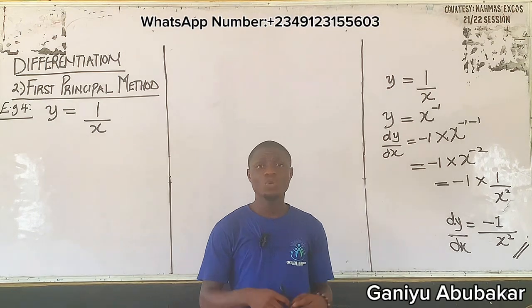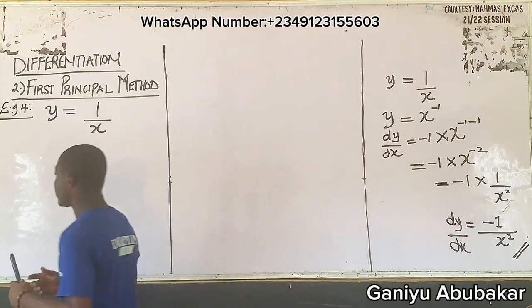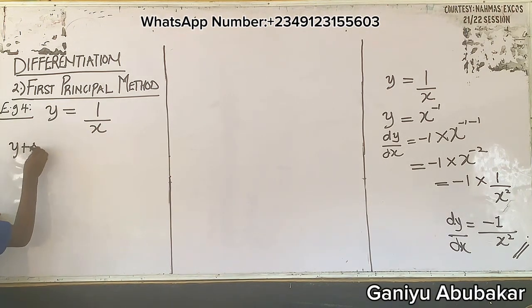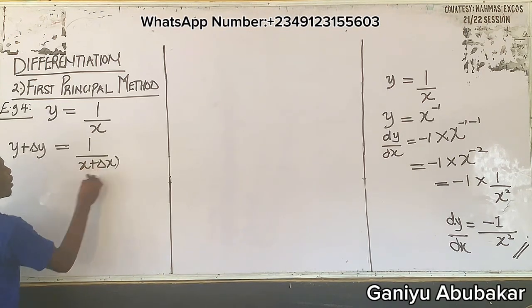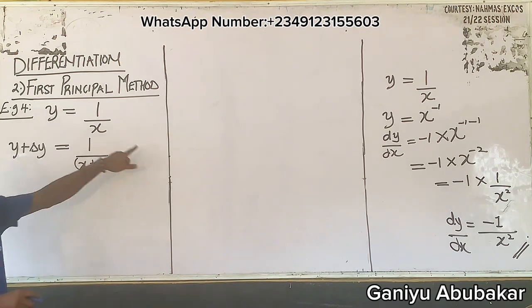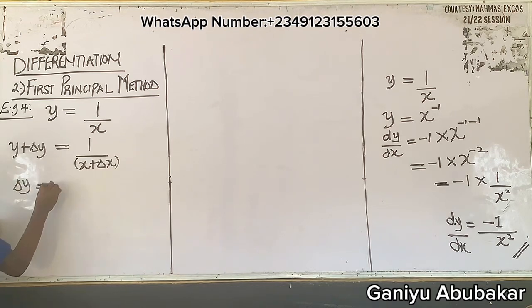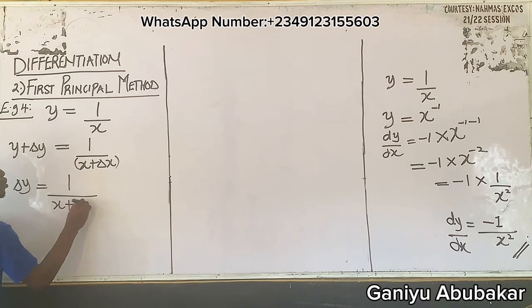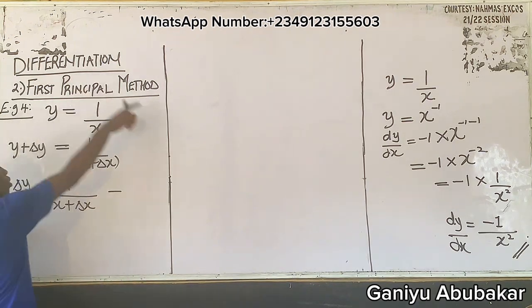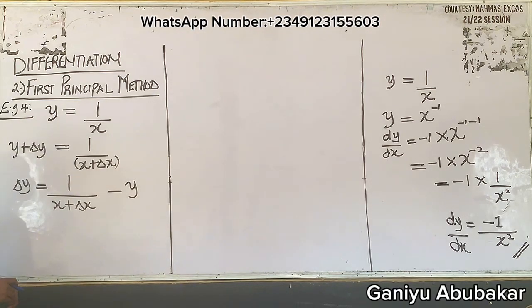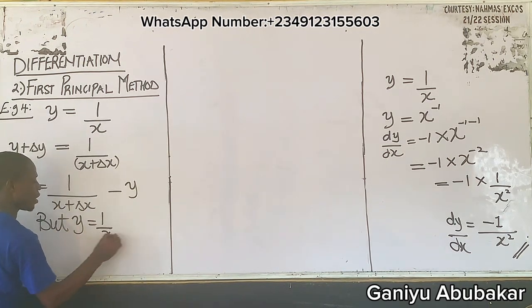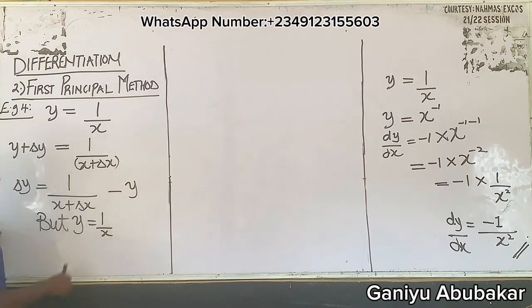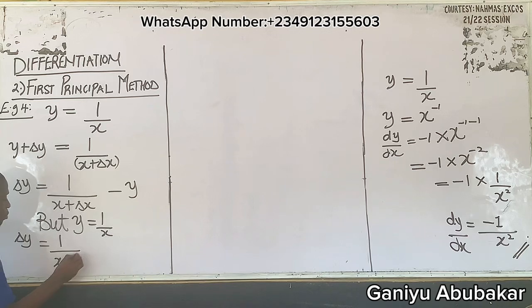In first principle, we said y plus change in y is equal to 1 over x plus change in x. The next step is to take y to the other side, so change in y equals 1 over (x plus change in x) minus y. Since y in the question is 1 over x, wherever I see y I put 1 over x. So change in y equals 1 over (x plus change in x) minus 1 over x.